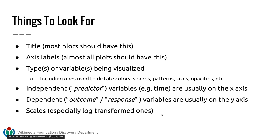Another thing to watch out for are the scales. Certain graphs have linear scales that look the way you'd expect, but sometimes the author will transform the scale using a log transformation, square roots, or another transformation. As you'll see later in this presentation, that's to help with data that's skewed in a particular direction — it makes the data look a little more interpretable and helps you see the patterns better.